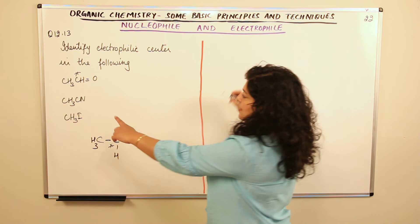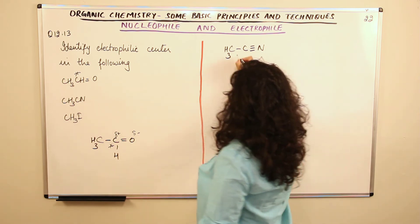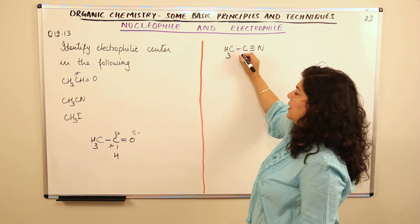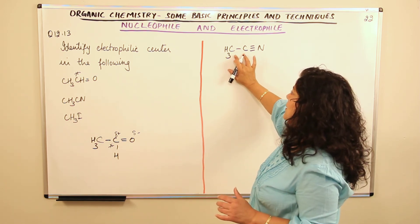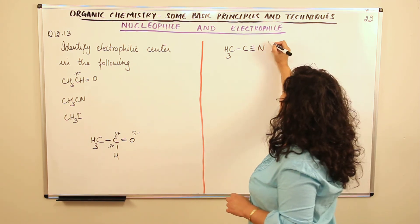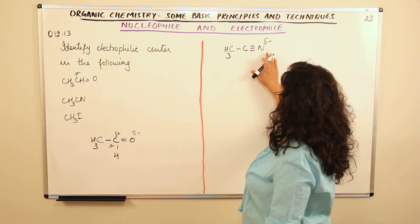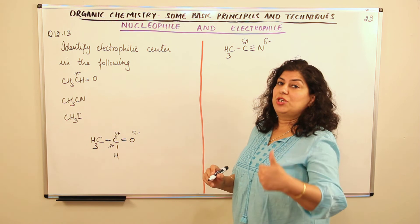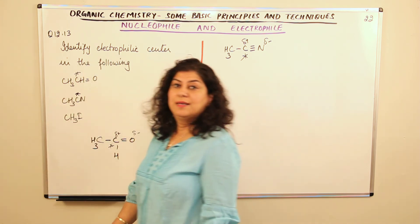The next compound is CH₃C≡N. In CH₃CN, the carbon attached to CH₃ has the same polarity as CH₃ carbon — no issue there. But this carbon is attached to nitrogen via a triple bond, and nitrogen is electronegative. Nitrogen becomes partially negatively charged, pulling electrons, and the carbon attached to nitrogen becomes partially positively charged. The atom that is partially positively charged is the electrophilic center. So in CH₃CN, this carbon (attached to N) is the electrophilic center.